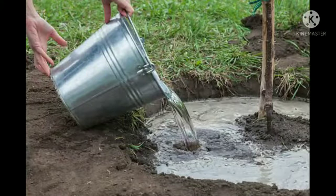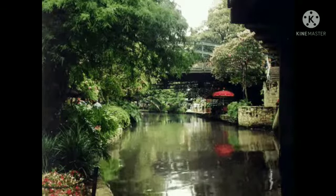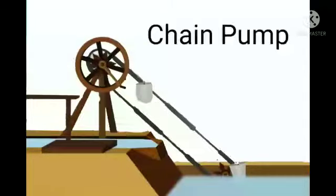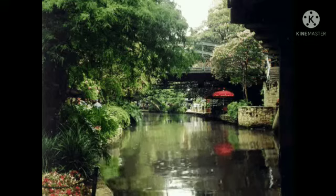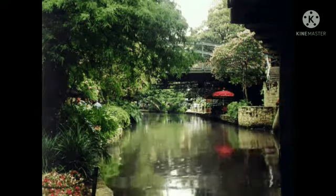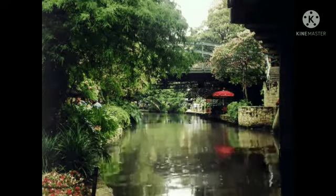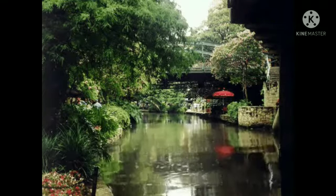The farmer draws water and pours it directly into the field. The second is the chain pump. It is used to lift water from a distant stream, canal, or a pond.